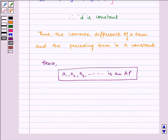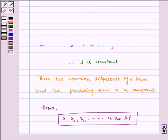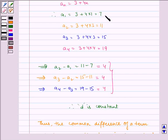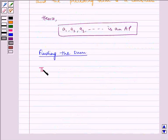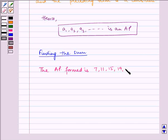Now let's find the sum. From above, we can see our AP is 7, 11, 15, 19, ... Here a = 7, d = 11 - 7 = 4. Since we have to find the sum of the first 15 terms, n = 15.